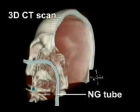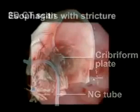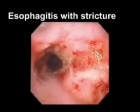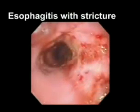Nasogastric intubation should be avoided in patients with significant maxillofacial trauma, as the tube may enter the cranial vault if the thin cribriform plate has been disrupted. The procedure should also be avoided in patients with known esophageal abnormalities, such as recent caustic ingestion, diverticulae, or strictures, as they are at high risk for esophageal perforation.